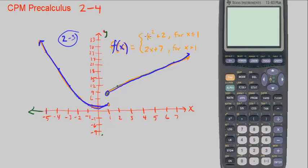f of x as x squared plus 2, for x is less than or equal to 1, and 2x plus 7, for x is greater than 1. So this was Number 3 in Chapter 2.